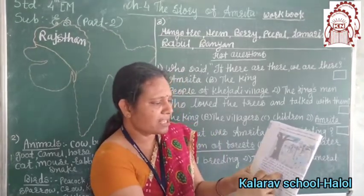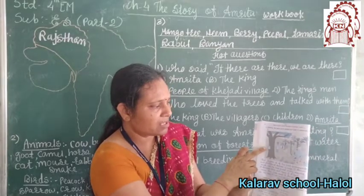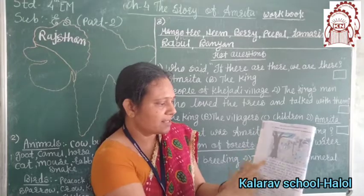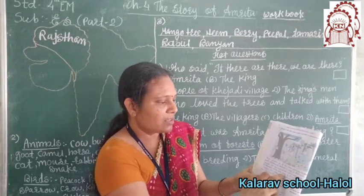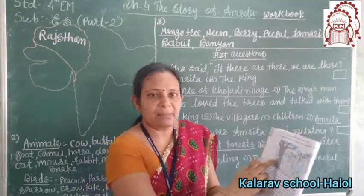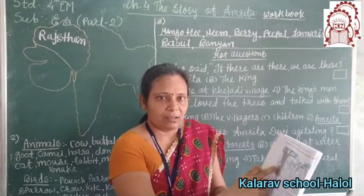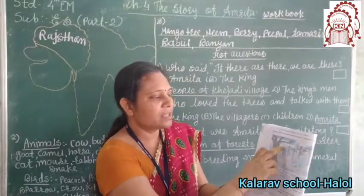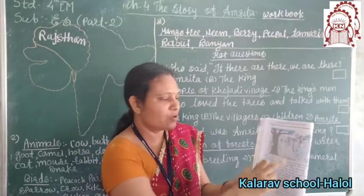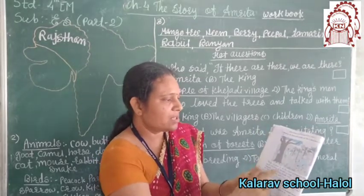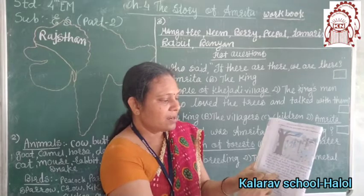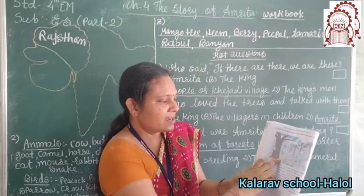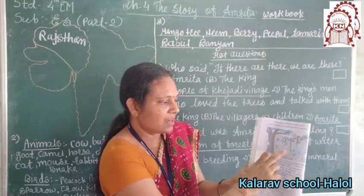Amrita meets all her tree friends every morning. Here is Amrita — she greets the trees and hugs the trees. Amrita talks with the trees; every time she whispers to the trees. A bird sings near the bank of the river. A parrot is sitting on the tree. Cow and squirrel are near the tree.